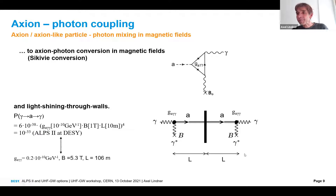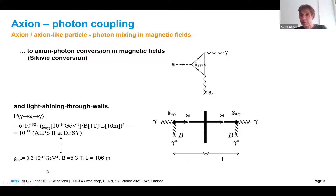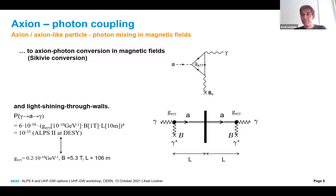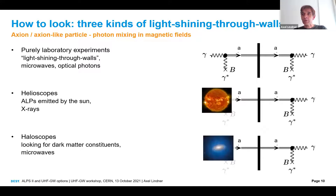With ALPS 2 we target axion-like particles motivated by astrophysical anomalies. With a field strength of 5.3 tesla and a length of one string of 106 meters, we have photon-axion-photon probabilities of order 10^-33, which we have to probe. That's quite a challenge.